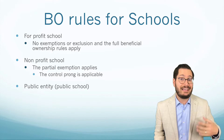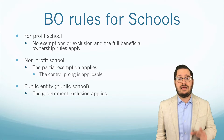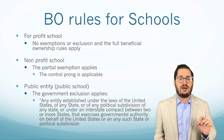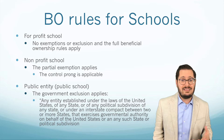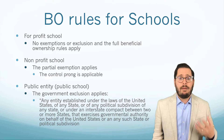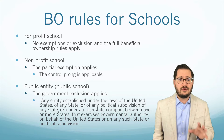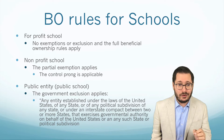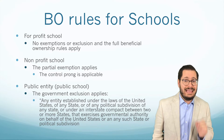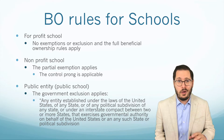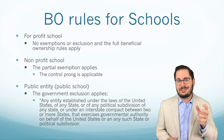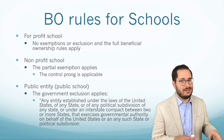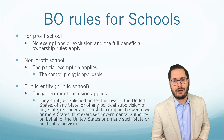If the school corporation or the school is a public entity, like a public school, then the government exclusion is going to apply. Basically, if your school corporation has the ability to tax, then they are going to be exempt from beneficial ownership rule requirements, as well as CIP and other BSA requirements as well.